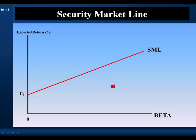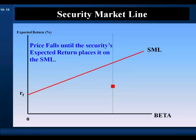Now suppose a risky asset fell below the security market line. This asset has a lower expected return than assets of comparable risk, because this asset is overpriced. Investors would be selling this asset out of their portfolio to take advantage of its high price. The selling would cause its price to fall, and its return will rise until it falls on the security market line and there is no more advantage to selling the asset. So in equilibrium, all assets must fall on the security market line.